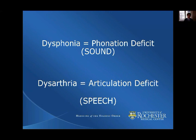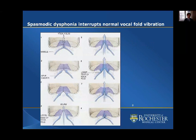Oftentimes people with spasmodic dysphonia are thought to have primarily articulation disorders, but the problem is occurring at the level of the true vocal folds. Spasmodic dysphonia interrupts normal vocal cord vibration. To get optimal sound, the vocal folds need to be approximately one millimeter apart from each other as air flows through them.